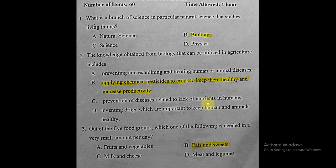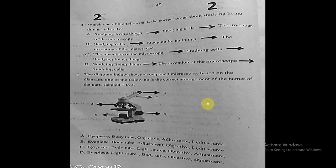Question four: which of the following is the correct order of studying living things and cells? The choices involve different orderings of studying living things, inventing the microscope, and studying cells. The correct sequence is: first studying living things, then inventing the microscope, then studying cells from those living things. So the correct answer is choice D.